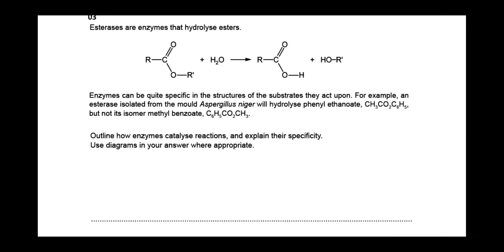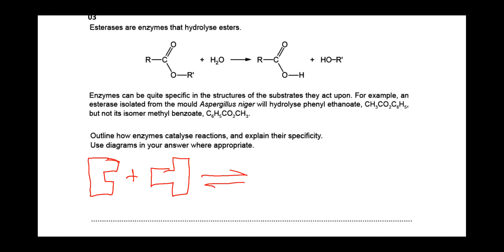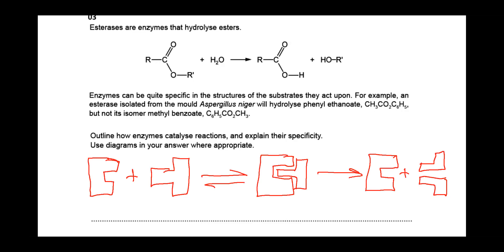We will create a lock-and-key model here and explain the specificity. We will create a substrate — the shape of the substrate is complementary to the active site. The enzyme has created an enzyme-substrate complex here. Then the enzyme and products have been created. We will label it properly: this is the enzyme, this is the substrate, and this is the active site of the enzyme.